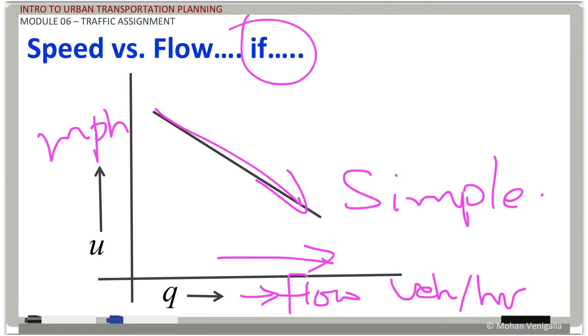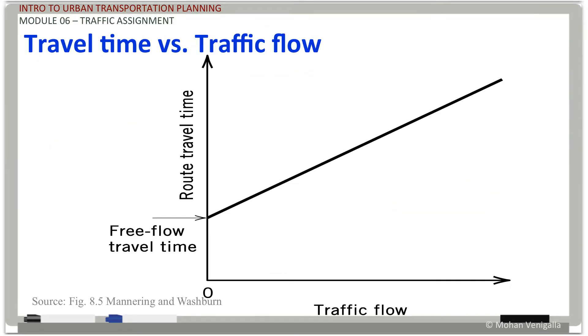This is the simplest. You can see as the flow increases, speed goes down. If only it is that simple. But if it is like this, how is it going to relate to travel time? Remember, in pathfinding we are not looking at speed, we are looking at travel time. Speed has to be converted into travel time.